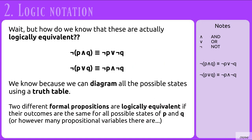But how do we know that these negation rules are actually logically equivalent? We know because we can diagram all possible states using a truth table. Two different formal propositions are said to be logically equivalent if their outcomes are the same for all possible states of P and Q, or however many propositional variables there are.